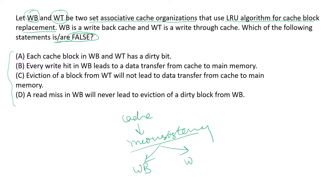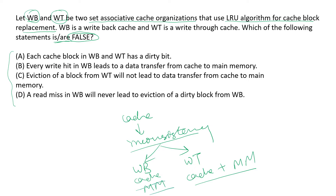To solve this inconsistency problem, we have two solutions: write-back cache and write-through cache. The difference is that in the write-through cache, we update the value simultaneously in both the cache and the main memory, whereas in the write-back cache, we first update the cache and then at a later stage update the main memory. Based upon this, let us look at the options.